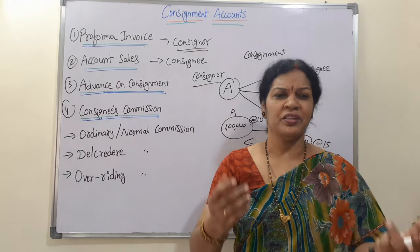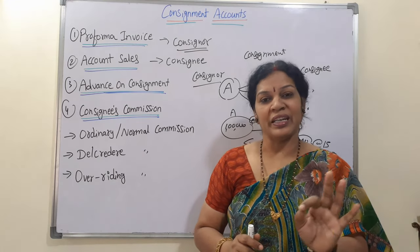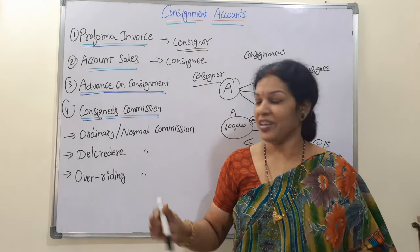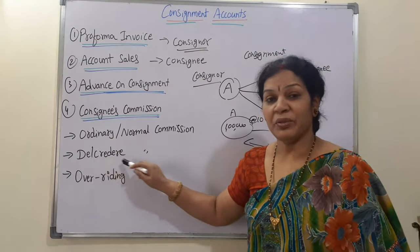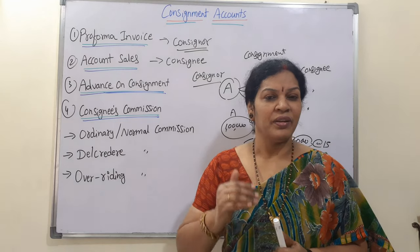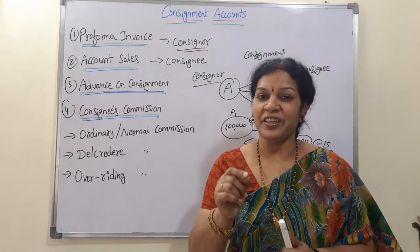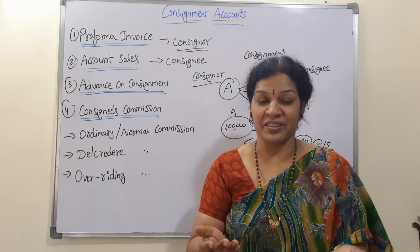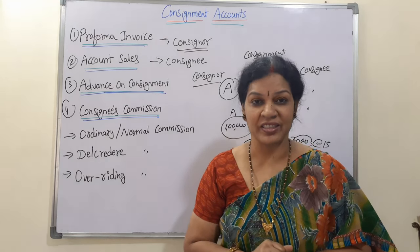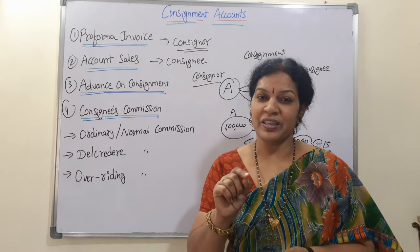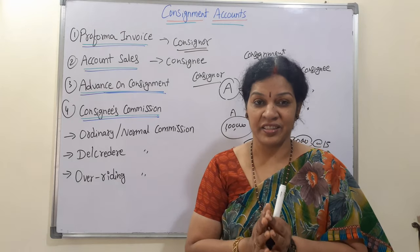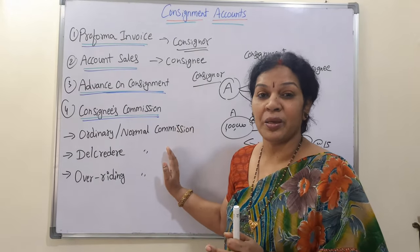Ordinary or normal commission: for example, on 70,000 goods sold the consignor agreed to pay 5%, which comes to 3,500. That is the general, normal, or common commission. Del credere commission: sometimes the consignee may sell goods on a credit basis. Whenever selling on credit, there is a risk of bad debts. For bearing this risk, the consignee may be given an extra commission called del credere commission.